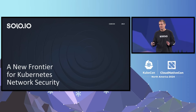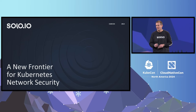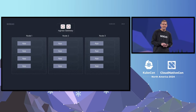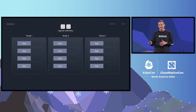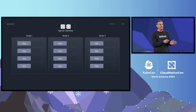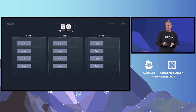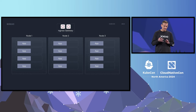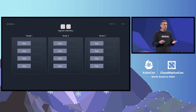Before we talk about new frontiers, let's talk a little bit about the existing landscape for Kubernetes security. As long as there has been Kubernetes, there has been Ingress. But Ingress has emerged as more than just getting traffic into the cluster. Ingress gateways have become the go-to mechanism for implementing security, observability, and advanced routing into workloads running in your Kubernetes cluster.